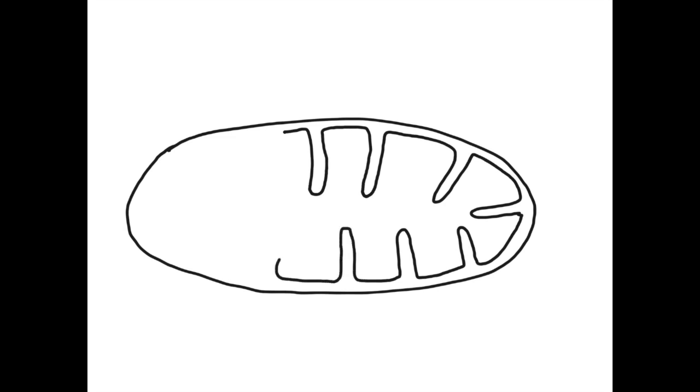Now we start drawing the inner membrane. As you can see here, the inner membrane is thrown into folds towards the inner side, which increases the surface area inside the mitochondrion.